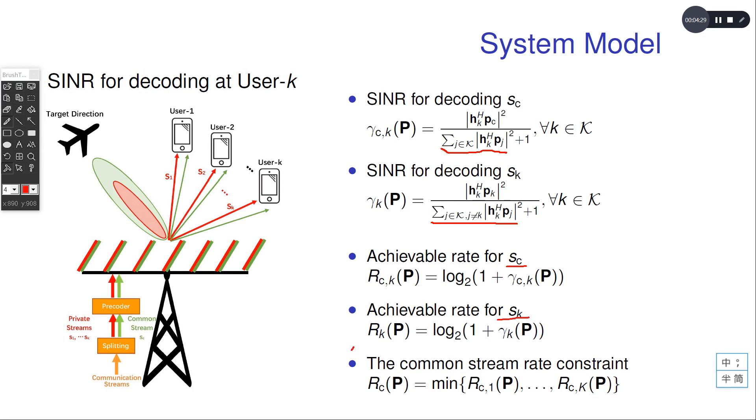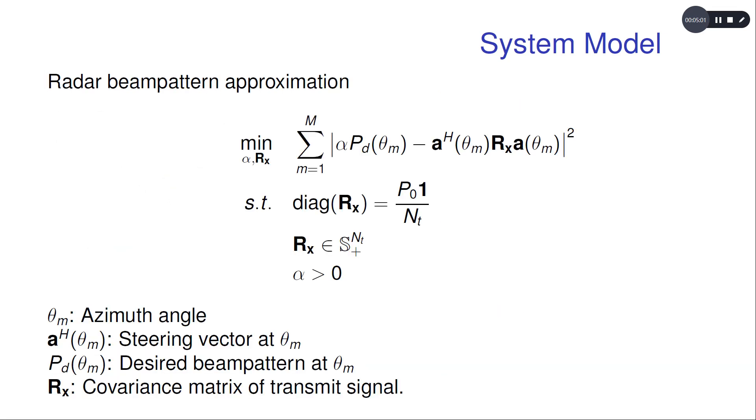Then we can represent the achievable rates for both the common stream and the private streams at user K. Also, don't forget the common stream rate constraint here. Then, after introducing the communication metric, which are the achievable rates, we are going to introduce the radar metric.